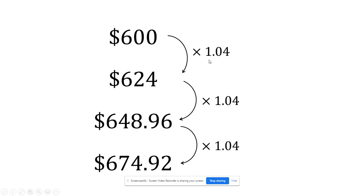So simple interest, we added the same thing each time because the interest never changed. It was always an interest based on the principle. With compound interest, we're multiplying by the same thing every time.